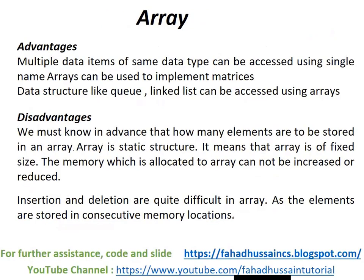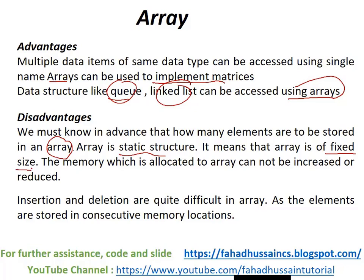Every data structure has its own advantages and disadvantages. Advantages of arrays: multiple items of the same data type can be accessed using a single named array; arrays can be used to implement matrices; and data structures like queues and linked lists can be accessed using arrays. Disadvantages: we must know in advance how many elements will be stored. Arrays are static by default — fixed size — and although dynamic allocation is possible, in many scenarios it is not applicable. Memory allocated to an array cannot be increased or decreased, and insertion and deletion are quite difficult.